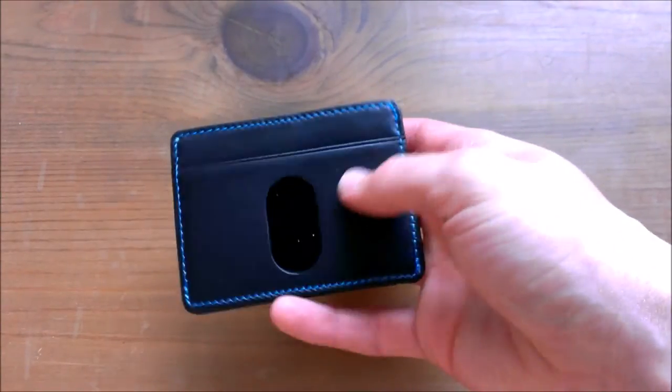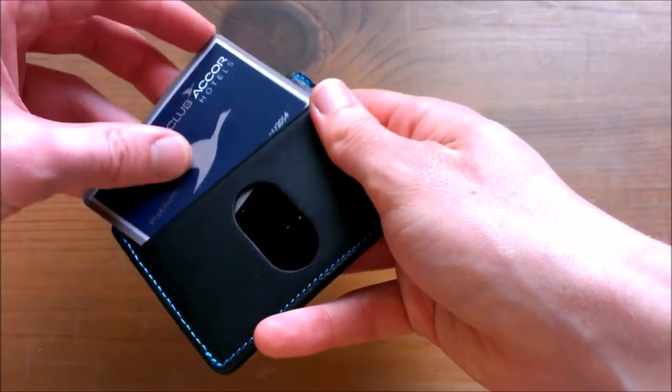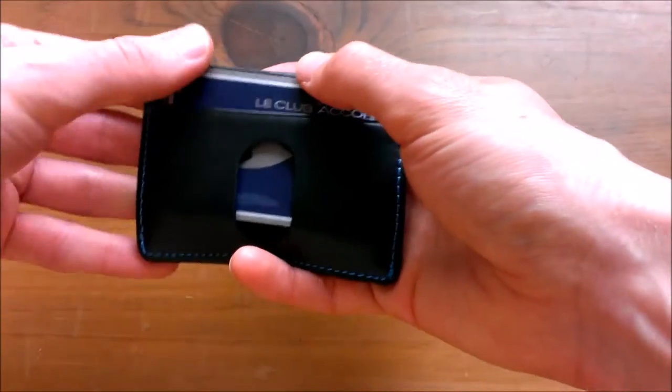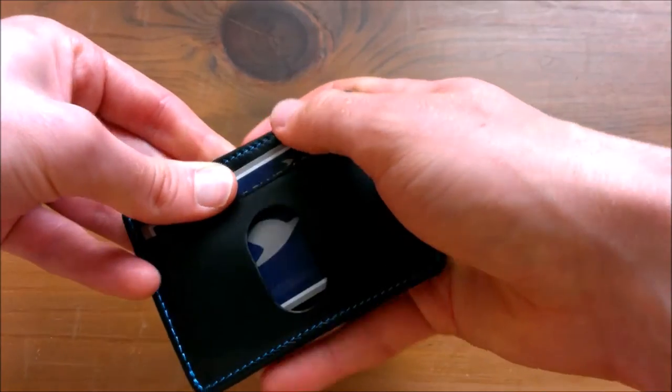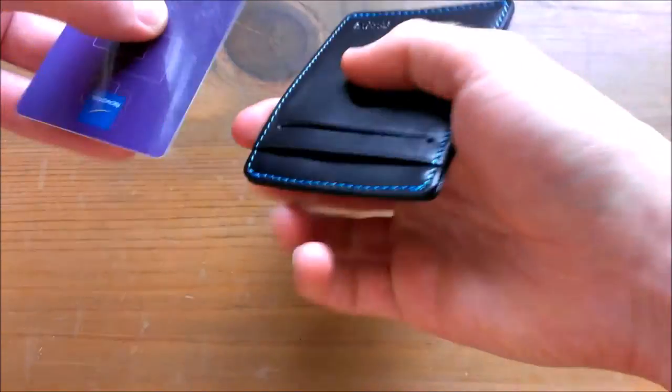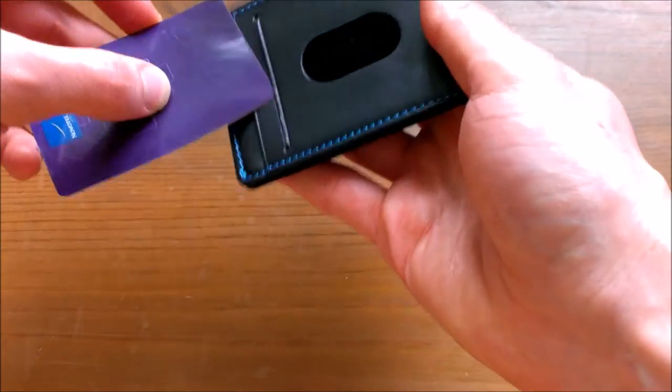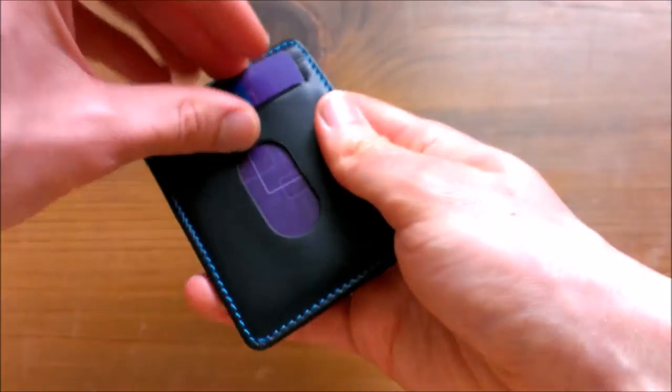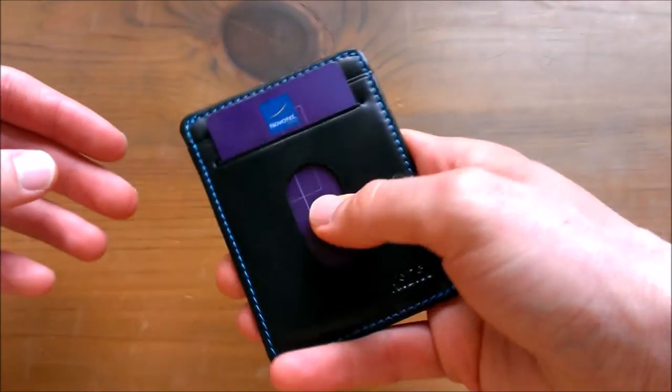We'll load up the wallet now and we'll show how these quick draw slots are used. So there's one horizontal and one vertical, and I should also mention that the little thumb slot bits in behind there is quite a nice soft fabric material that allows the cards to smoothly run.